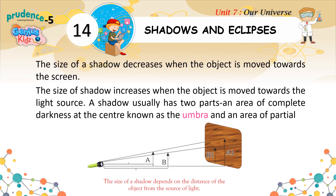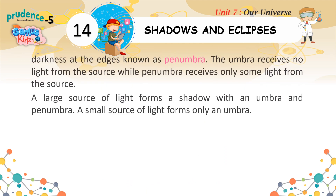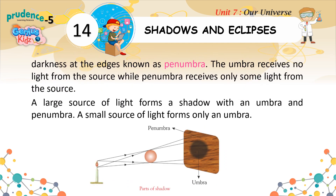The size of a shadow decreases when the object is moved towards the screen. The size of a shadow increases when the object is moved towards the light source. A shadow usually has two parts: an area of complete darkness at the center known as the umbra, and an area of partial darkness called the penumbra. The umbra receives no light from the source while the penumbra receives only some light. A large source of light forms a shadow with both an umbra and penumbra, while a small source of light forms only an umbra.